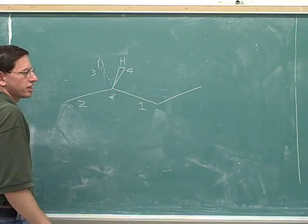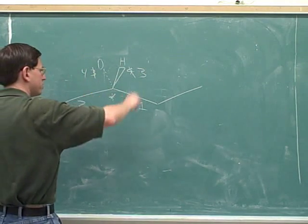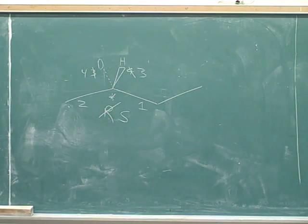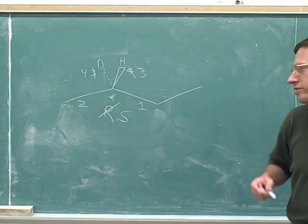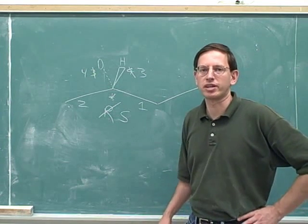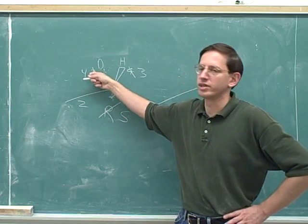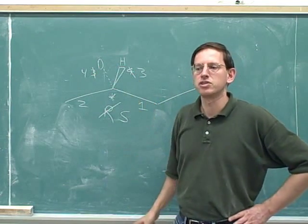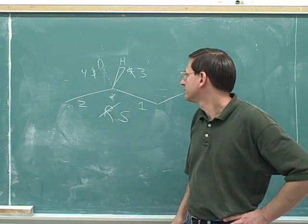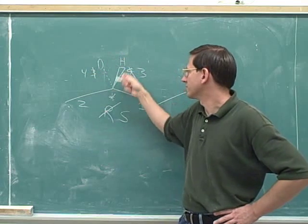The number four priority is pointing towards us, so we need it to point away from us. Let's swap the four and the three. Now the configuration on the page is R, but since we made a swap, the true configuration is S. So the answer is S — this is an S configuration. The main purpose of this problem was to review how to deal with deuterium: whoever has the higher atomic numbers gets the higher priorities, but when atomic numbers are tied, whoever has the higher weight gets the higher priority. The deuterium had the three priority and hydrogen had the four, before we made the swap to get number four pointing away from us.